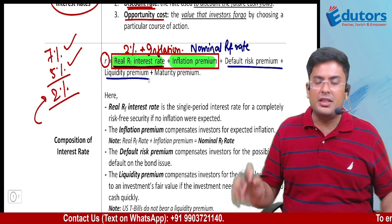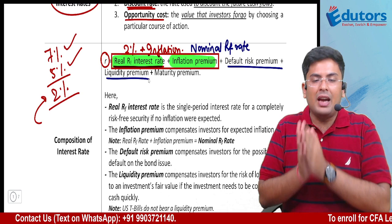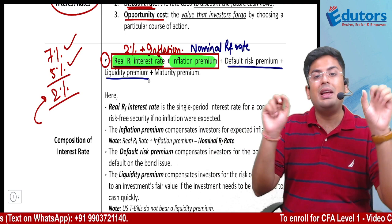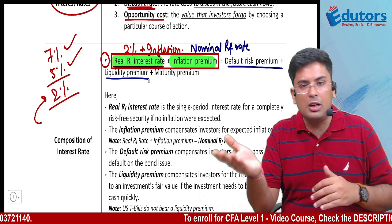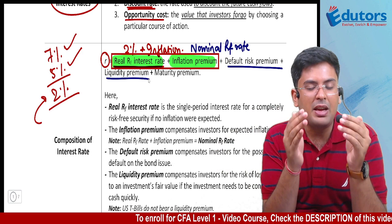Next is liquidity premium. Liquidity risk premium is a premium you receive because the investment you are in is not liquid. In the stock market, some shares are always on circuit — either upper circuit or lower circuit. This happens in securities where there are very few buyers and sellers. If you place a big order, there is a good chance it will not get executed.